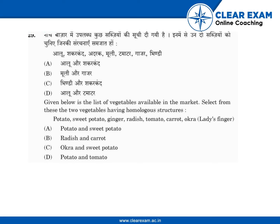Question 29: given below is the list of vegetables available in the market — select the two vegetables having homologous structures: potato, sweet potato, ginger, radish, tomato, carrot. The options are: (A) potato and sweet potato, (B) radish and carrot, (C) sweet potato and tomato.